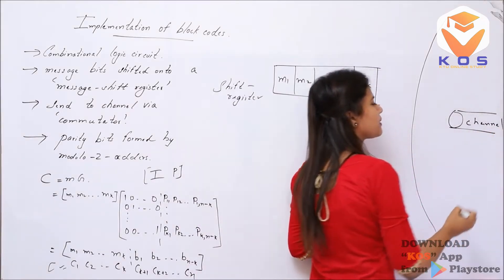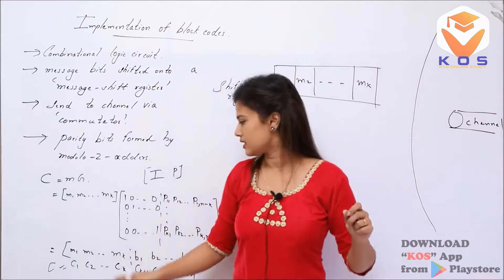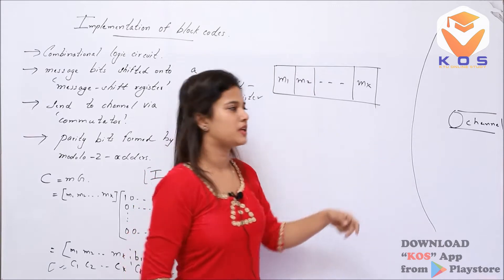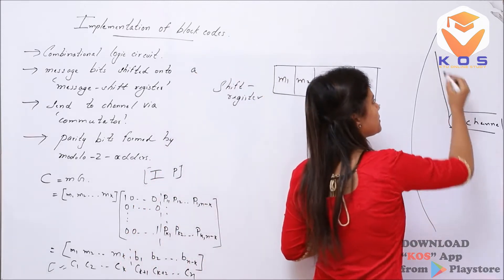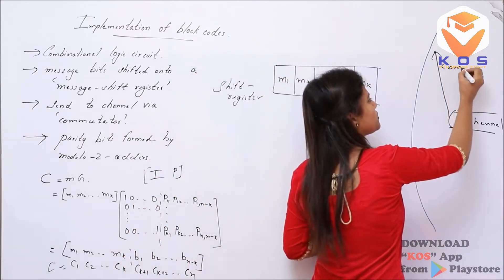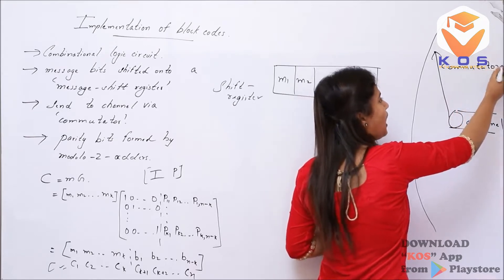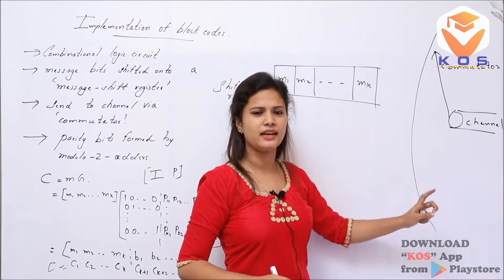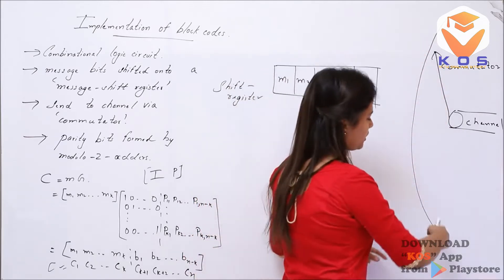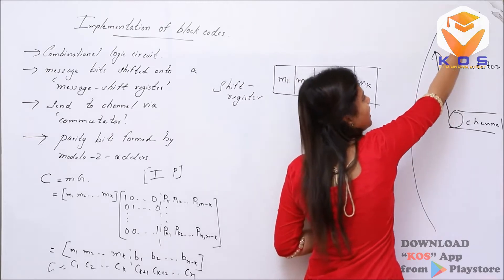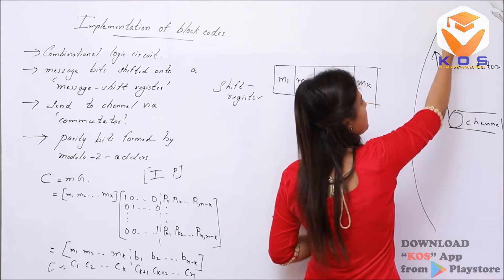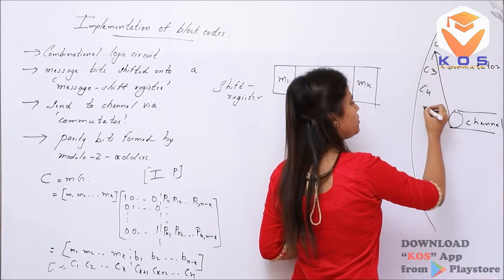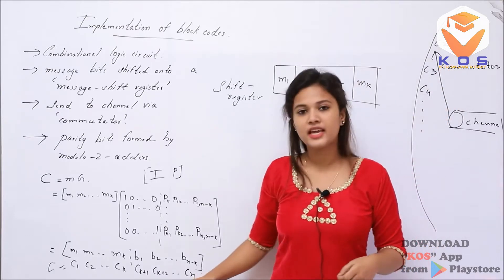We will be using code words that will be produced and transferred. We will have a commutator which will be used to transfer the code bits into the channel. The output part consists of the code words: c1, c2, c3, c4, etc., up to cn.